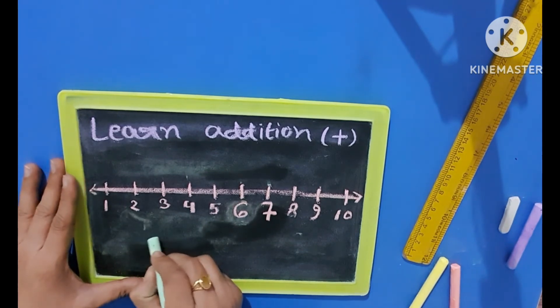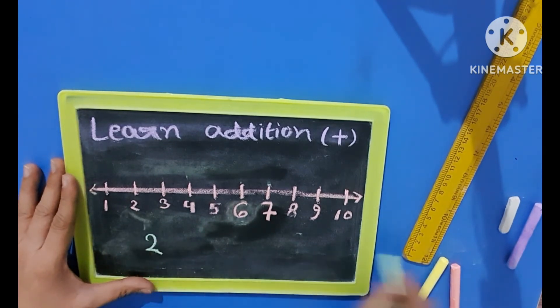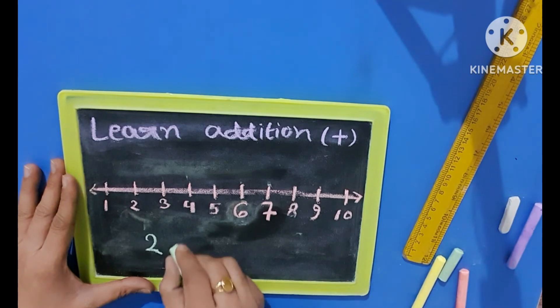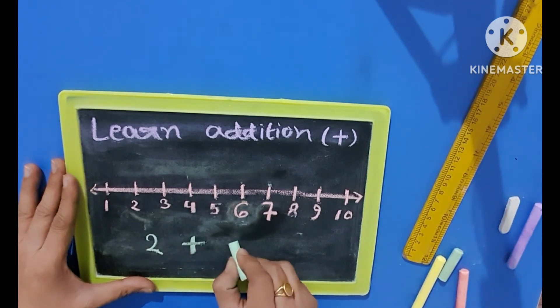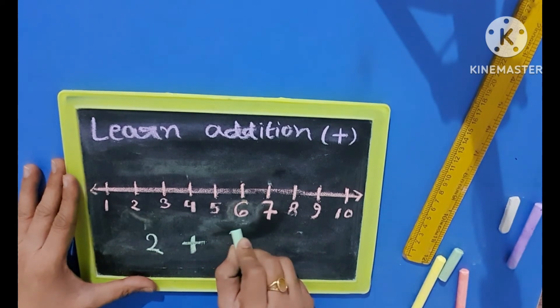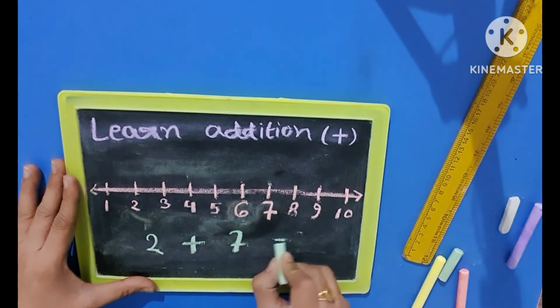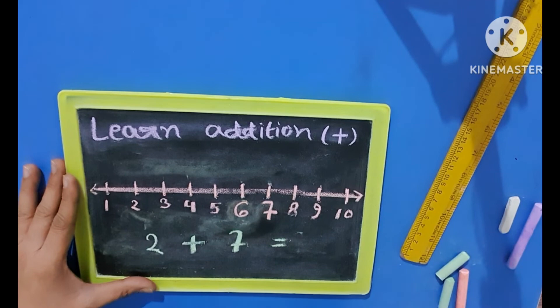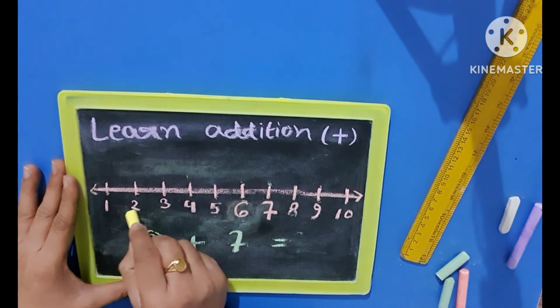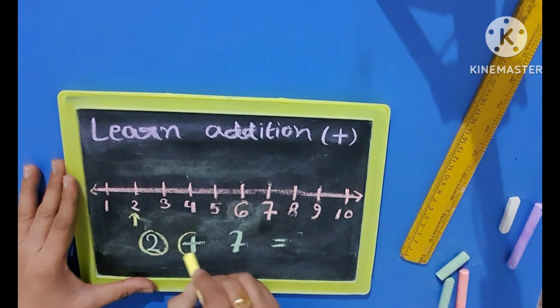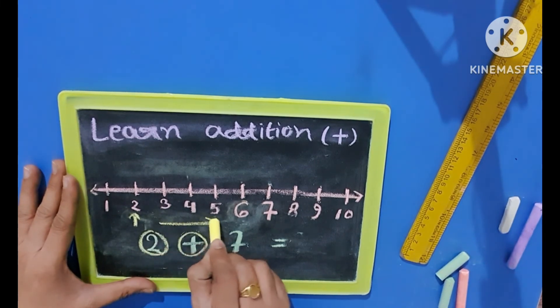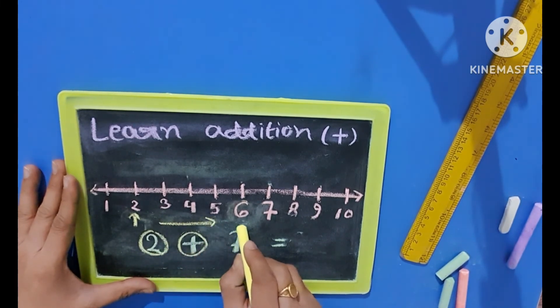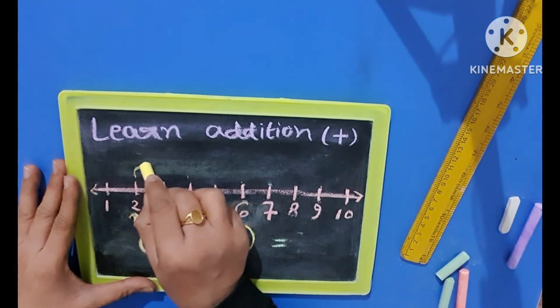Kids, now we will try with some other number. Let us try with bigger numbers. Now first number is 2, so we will identify 2 plus 7.